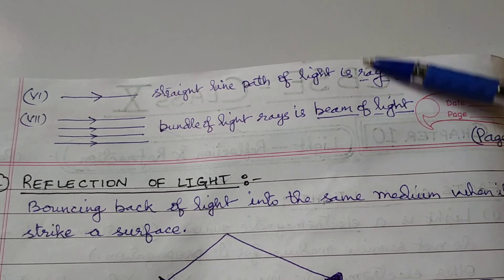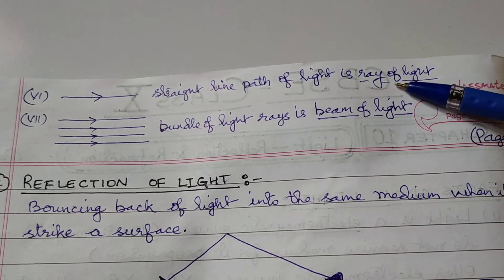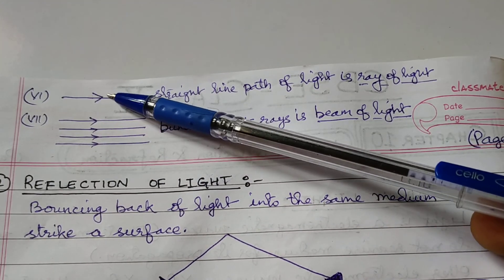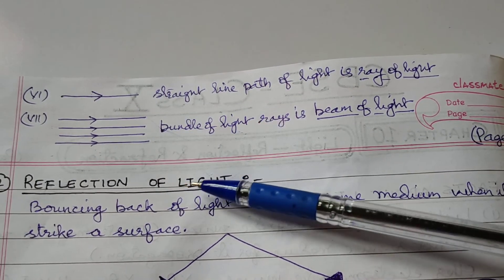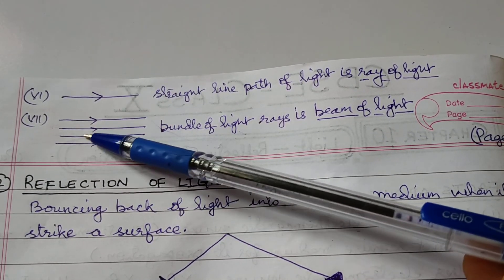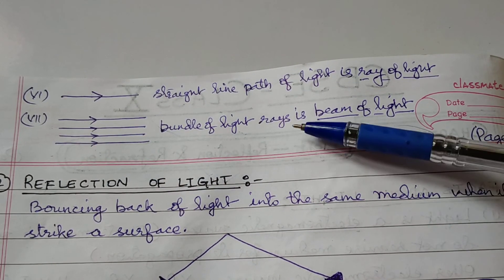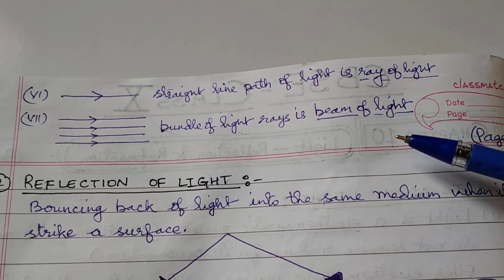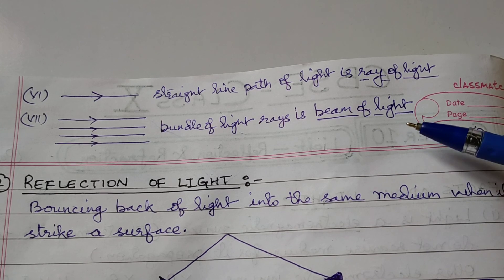The straight-line path in which light moves is called a ray of light. A ray of light shows the straight-line path of light. If we take a bundle of rays of light, that bundle is called a beam of light. We will discuss reflection and refraction in subsequent lectures.